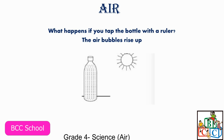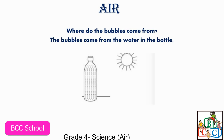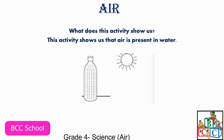Now what happens if you tap the bottle with a ruler? The air bubbles will rise up. Where do the bubbles come from? The bubbles come from the water in the bottle. This activity shows us that air is present in water.